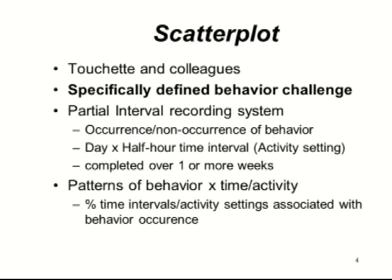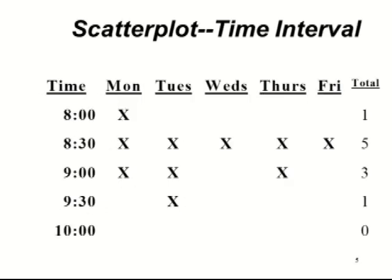One very helpful tool is the scatter plot. A scatter plot is essentially just a grid where you divide the day up into time intervals — half-hour intervals or broken down by a student's schedule. You then indicate in each square of the grid whether or not the behavior occurred during that time. Sometimes a code is used to indicate more than one occurrence. The goal is not to get very specific information, but just to identify periods of the day where problems are more likely to happen.